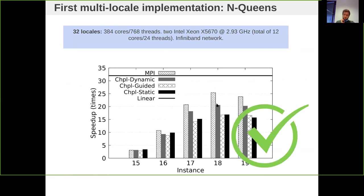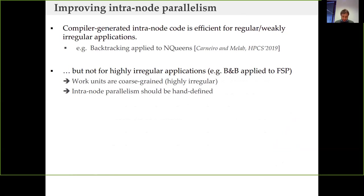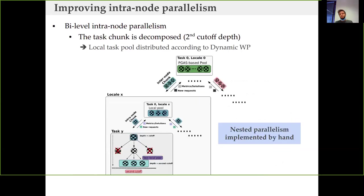Chapel is feasible for the design and implementation of tree-based search. Since we have a good prototype that works, let's extend it for solving combinatorial optimization problems. The problem we faced is that relying on the iterator for using both levels of parallelism did not scale well for combinatorial optimization problems, because the shape of the tree is much more irregular.